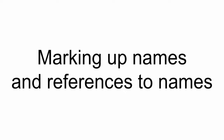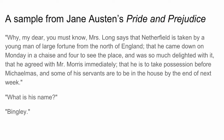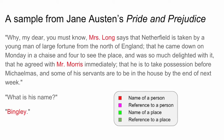Now we are going to see how to mark up names and references to names. Let's start with a simple example taken from Jane Austen's Pride and Prejudice. In this little passage of text, you can see that we have names of people here in red, names of places here in bright green, and references to a person in violet and references to places in darker green. None of this is the same and should be encoded with different elements.